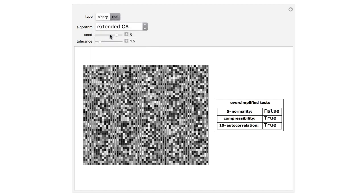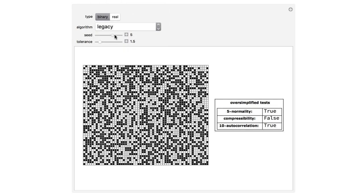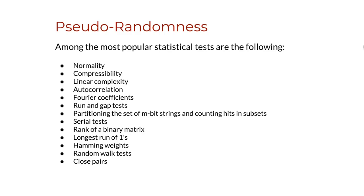In general it is a cat and mouse chasing game, with better PRNGs also suggested by better statistical tests and the other way around. Among the most popular statistical tests are normality, compressibility, linear complexity, autocorrelation, Fourier coefficients, run and gap tests, partitioning the set of n-bit strings and counting hits in subsets, serial tests, rank of binary matrices, longest run of ones, Hamming weights, random walks, close pairs, and many others. Some of them are very suggestive and some others are more obscure, but they are all statistical tests, and all of them can be used to test PRNGs and thus make them better.